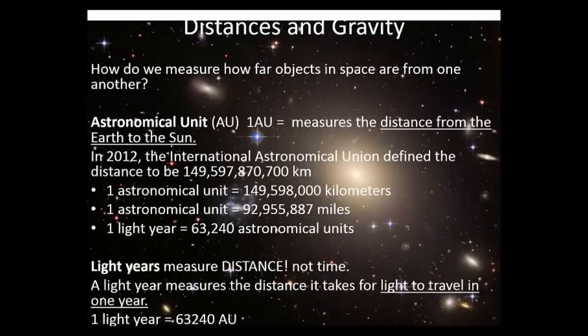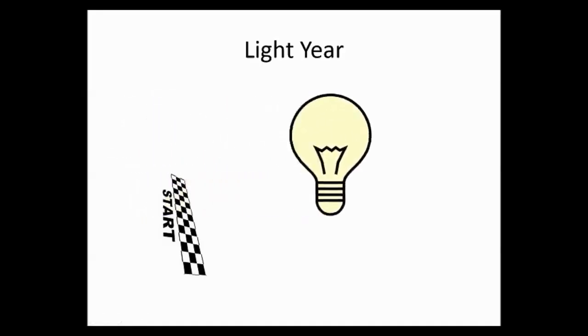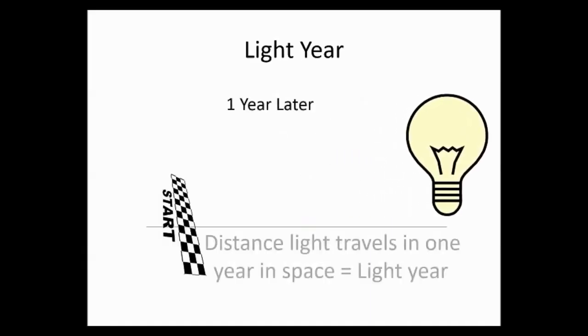Light year measures distance. It does not measure time. So it's the distance light travels in one year. It would be like if light set a starting line, and you said go, and then start traveling. One year later, however far that light travels, that would be equal to one light year. The distance from the start line to where it ended in that one year race is a light year.